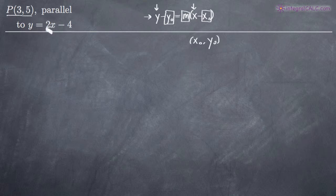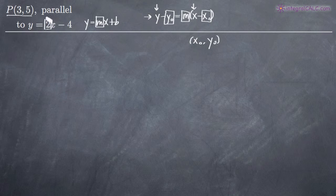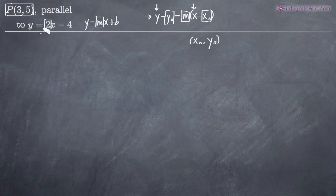This line, y equals 2x minus 4, is given to us in slope-intercept form, which is y equals mx plus b, where the slope is m. In both point-slope form and slope-intercept form, m represents the slope. So since this is in slope-intercept form, we know that the slope is the coefficient on the x term, which is 2. So now we've got our point (3, 5) and our slope, which is 2.